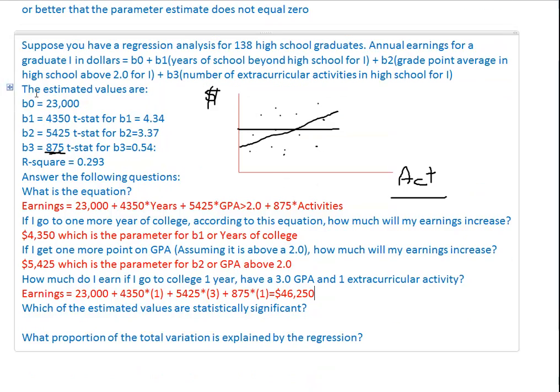If I did this correctly, which of the estimated values are statistically significant? And they should be anything above 2.0, which we already said was B1 and B2. So as we mentioned before, your years of schooling and GPA were statistically significant. B3 was not. And what proportion of the total variations explained by the regression line? And we already answered that one. 29.3%. And now we answered a question for you.